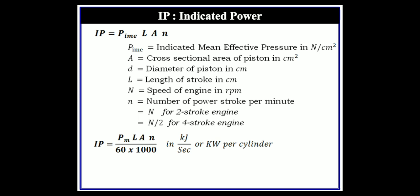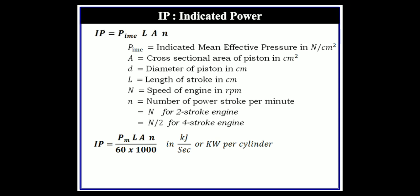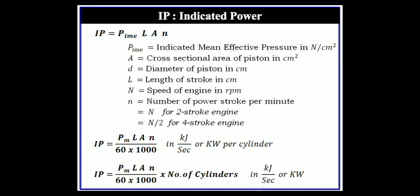To convert power strokes per minute to per second, divide by 60, giving Joules per second (Watts). Dividing further by 1000 gives kilowatts. This formula applies to one cylinder only. For a multi-cylinder engine, multiply by the number of cylinders to get total indicated power for the whole engine.